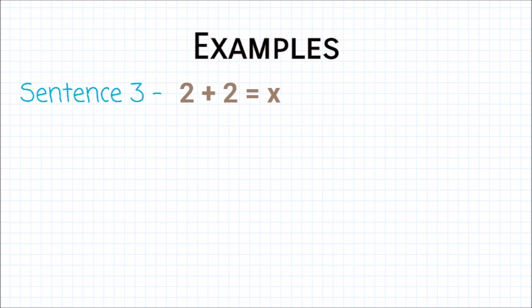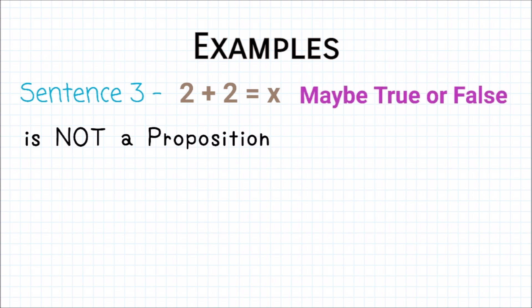Sentence 3: 2 plus 2 is equal to x. This sentence is not a Proposition because it may be true or false depending on the value of x, which we don't know. So sentence 3 is not a Proposition.